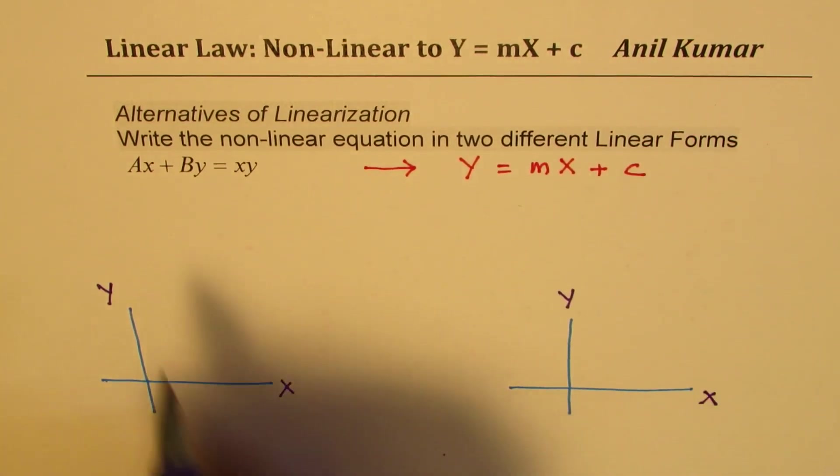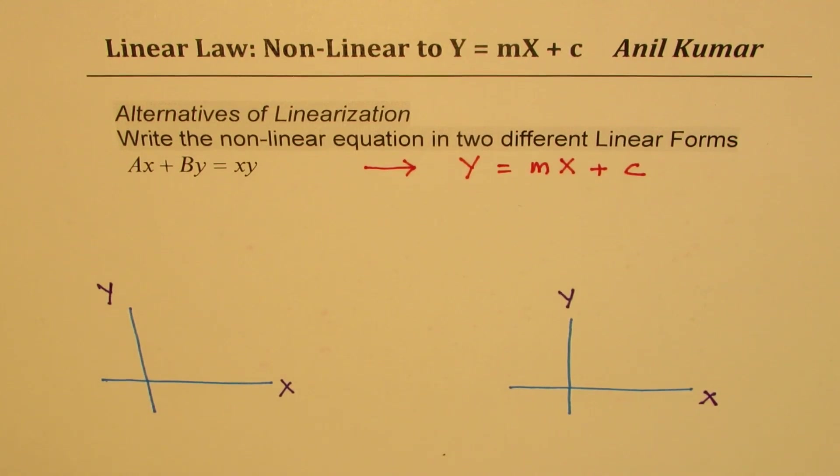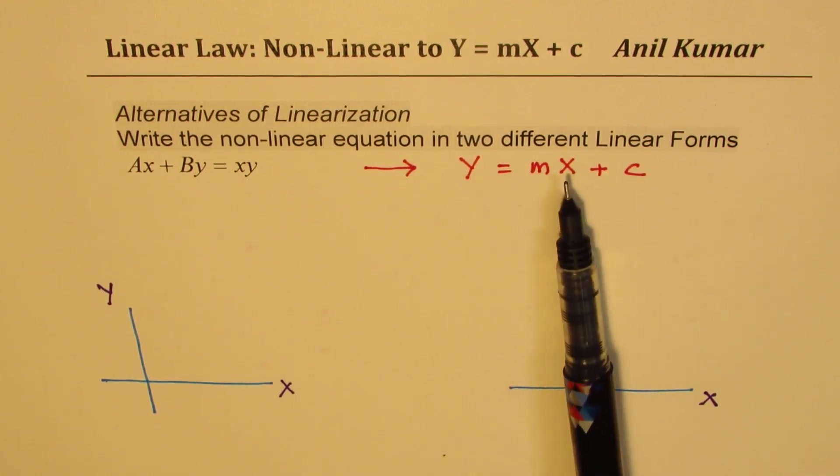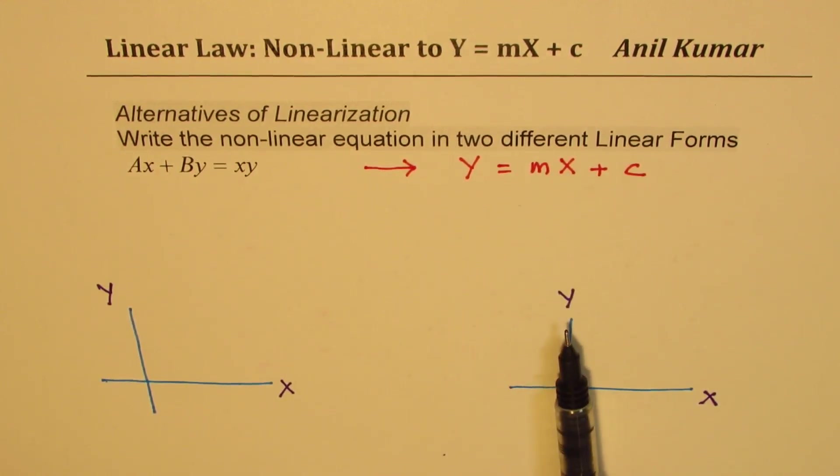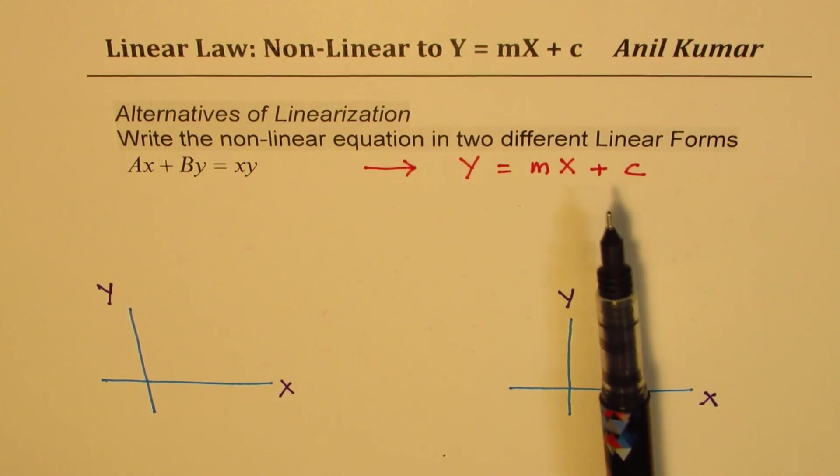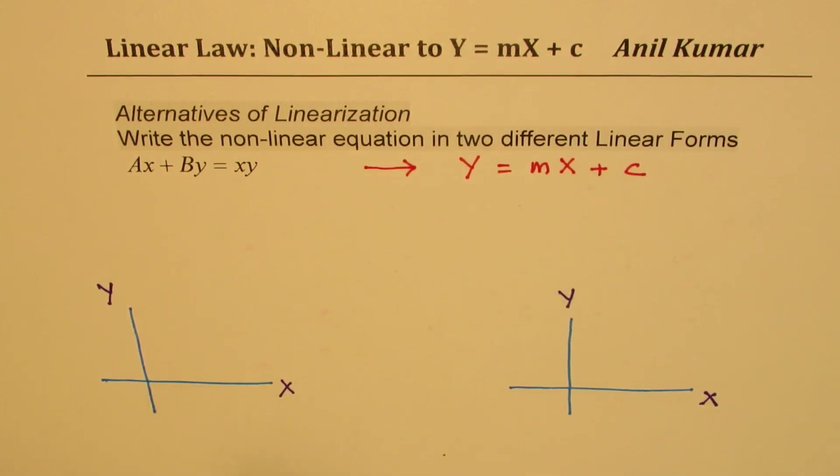When we are converting this to the linear form, we are trying to find the value of these capital X and Y that decide what is going to go on the vertical and the horizontal axis. Key of course is to have some value of constant C which represents the Y intercept for these graphs.